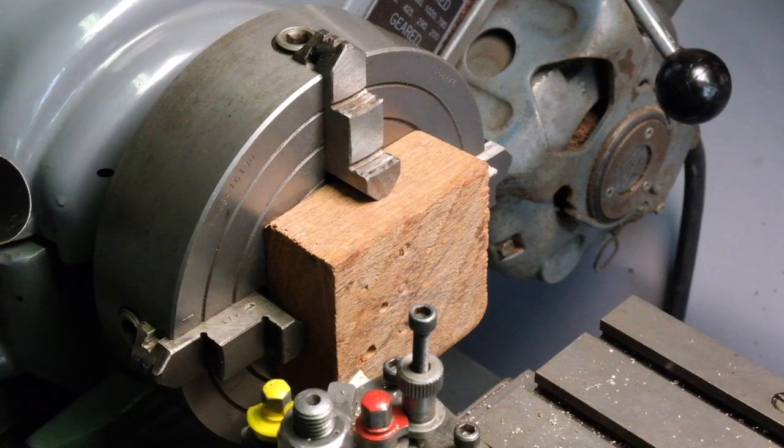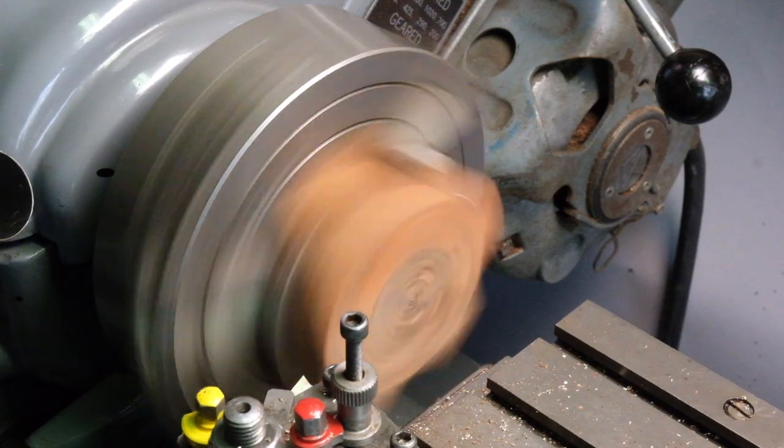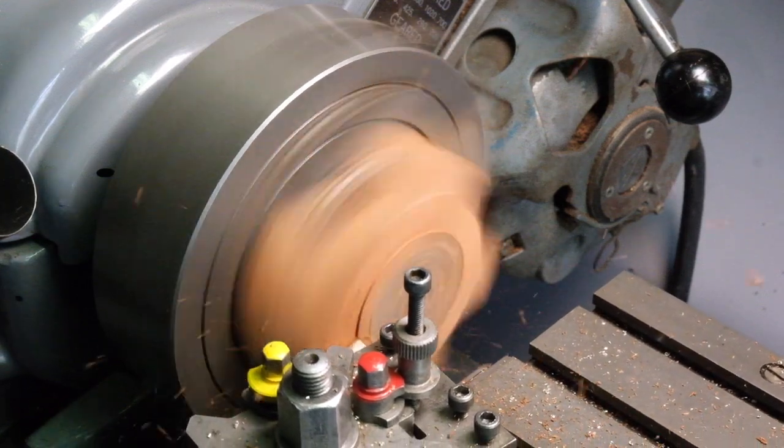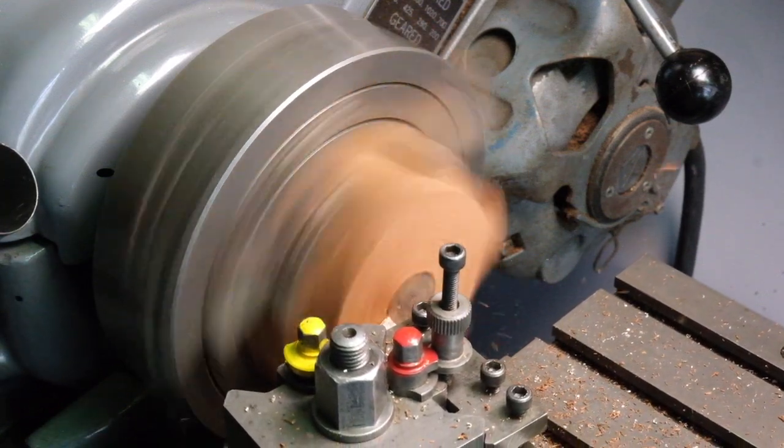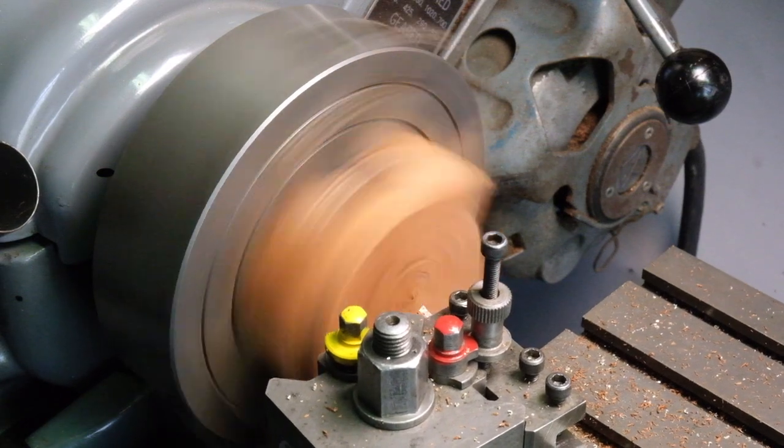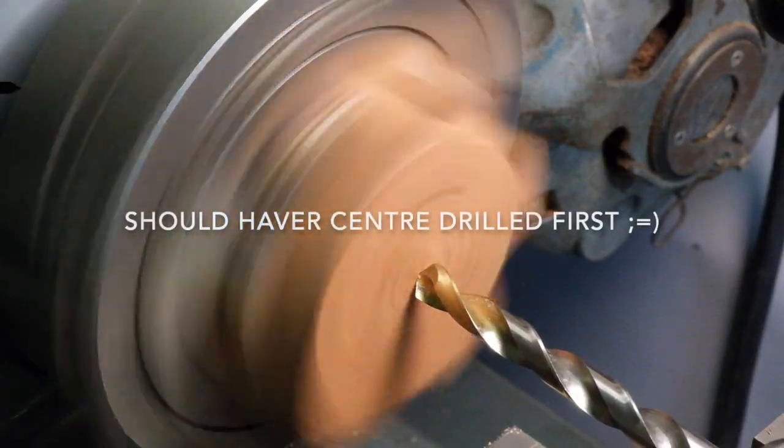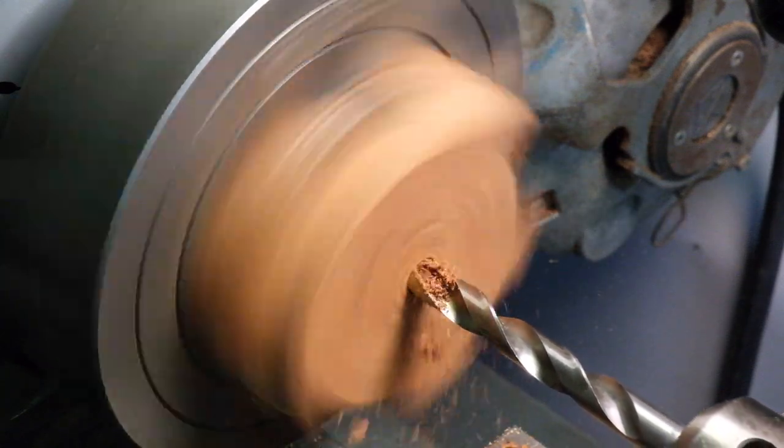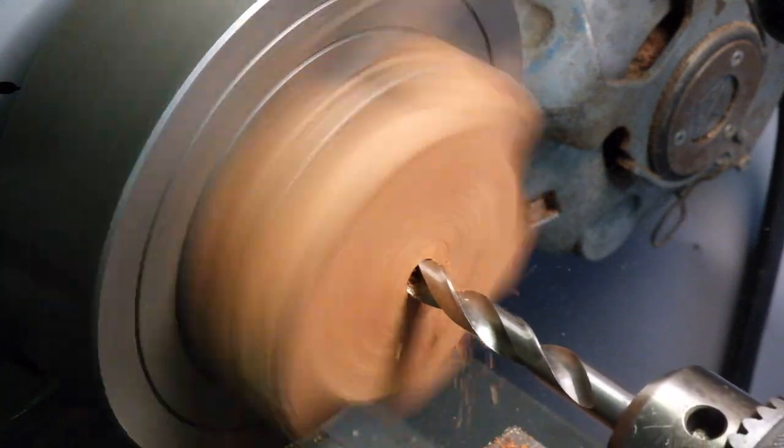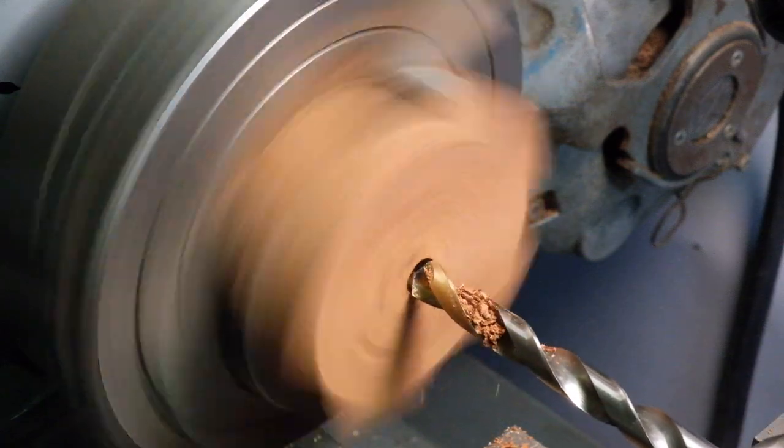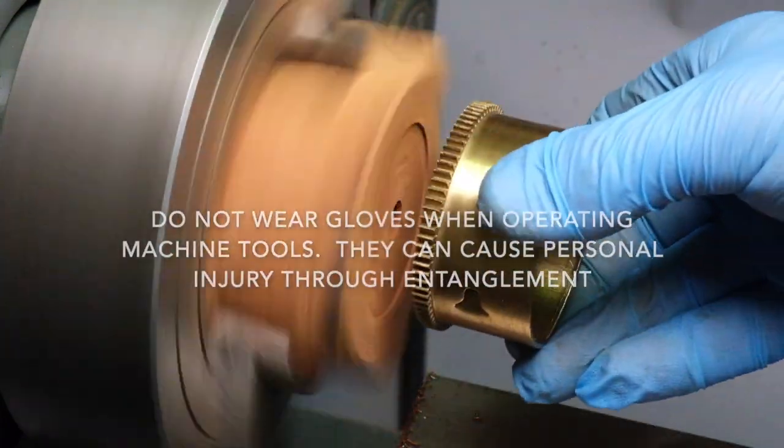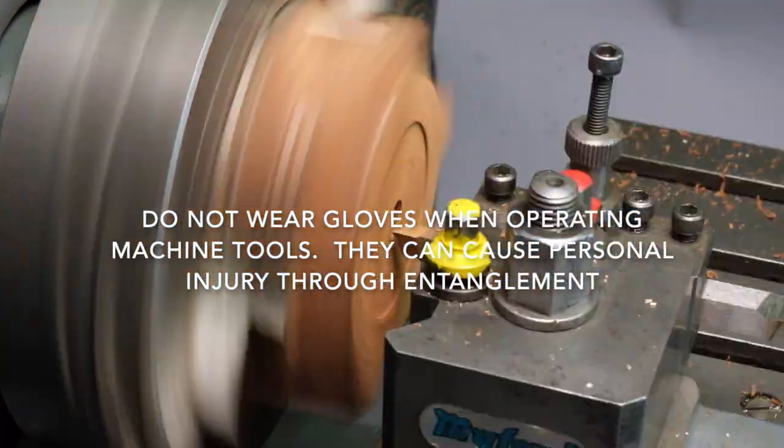So I set the piece of wood that we're going to use as our work holding in the jaws of the four jaw chuck. I then face off the wood to make it flat, drill a hole for clearance, and then begin to make the clearance recess. Once I've done that, the recess is slightly undersized.